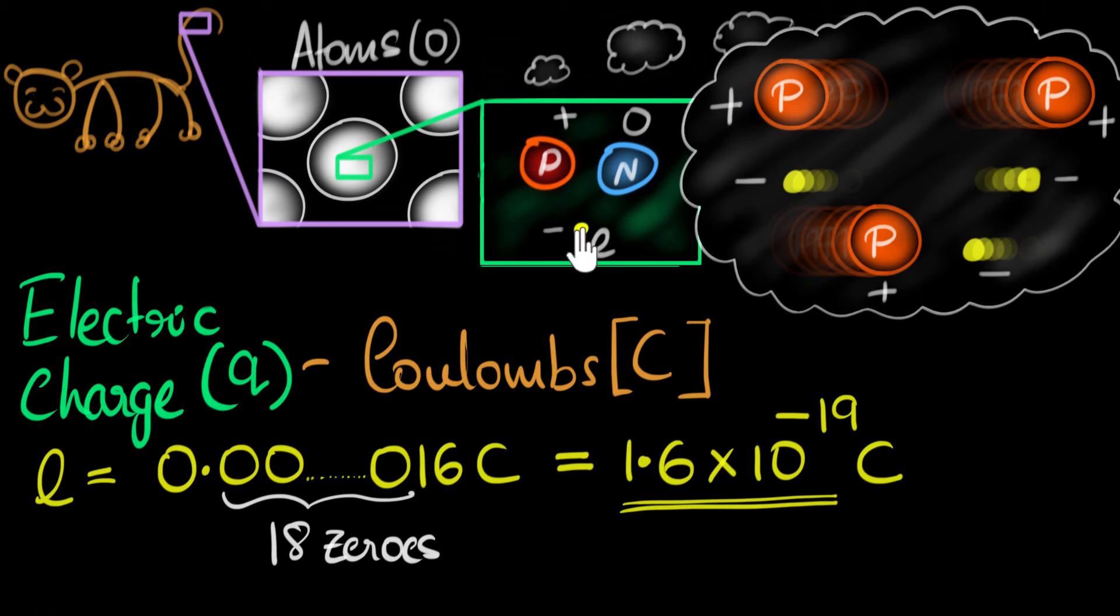Now that we know that the charge on an electron or a proton is such a small number, for electrons it would be negative, for protons it would be positive, we could ask ourselves how many, say electrons, would make up a total of one coulomb charge?